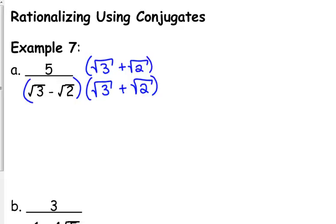So I'm going to multiply top and bottom by the square root of 3 plus the square root of 2. Now, on the top, I'm not going to multiply that out yet. I'm just going to leave that as it is.